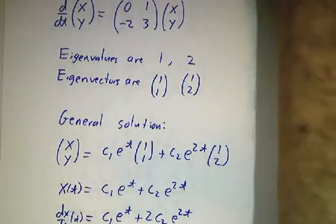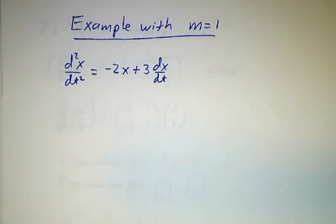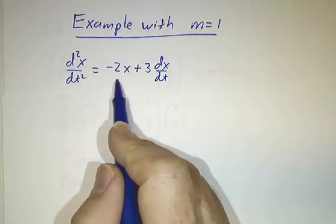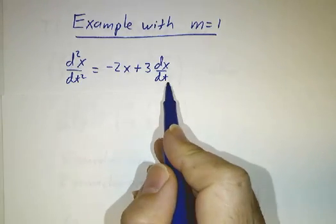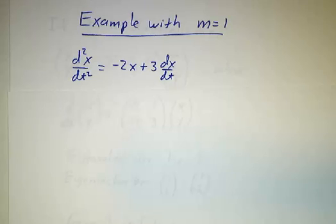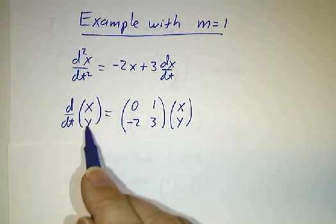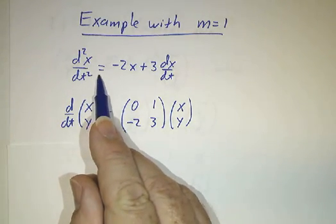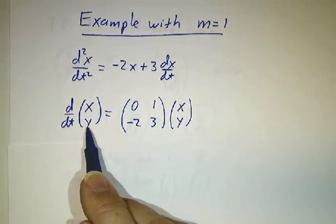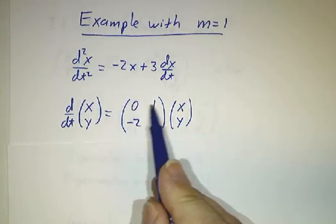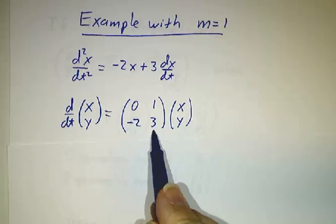So let's do an example with M equals just one. So we have the differential equation second derivative is minus 2x plus 3 dx/dt. So then we package x and the derivative of x into a two vector. You see we had a second-order system in one variable. We turn it into a first-order system in two variables.